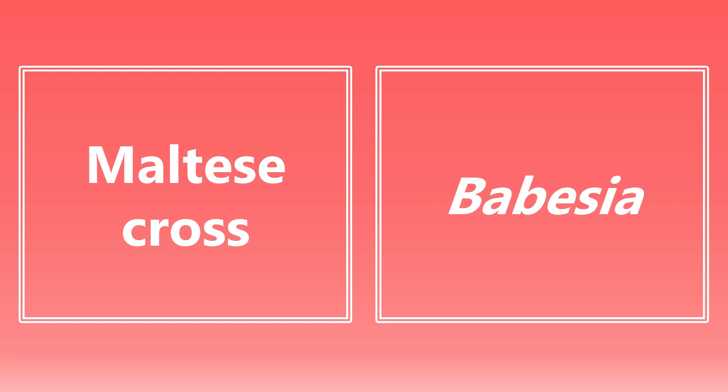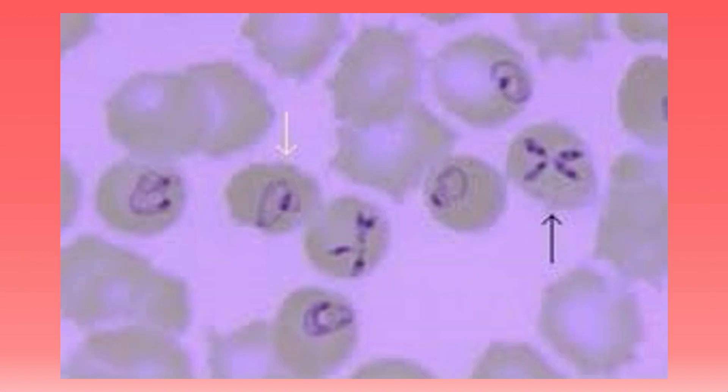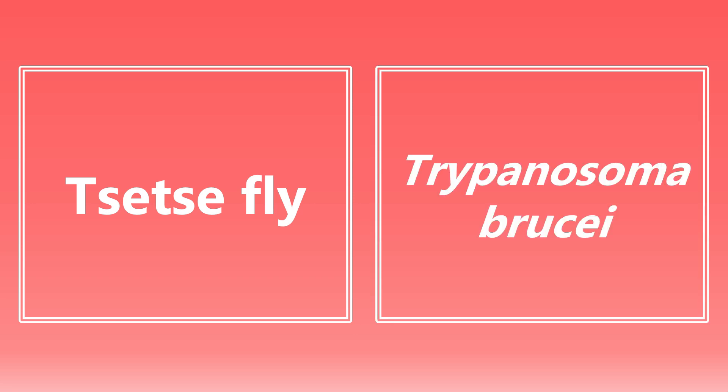A Maltese cross — if you see this on the exam, this is going to be because of Babesia. Remember, this is the tetrad of trophozoites formed on a blood smear. This is the Maltese cross and it will be seen with Babesia and babesiosis. Next one: the tsetse fly — this is very commonly tested. This is going to be trypanosoma brucei, the cause of African sleeping sickness.